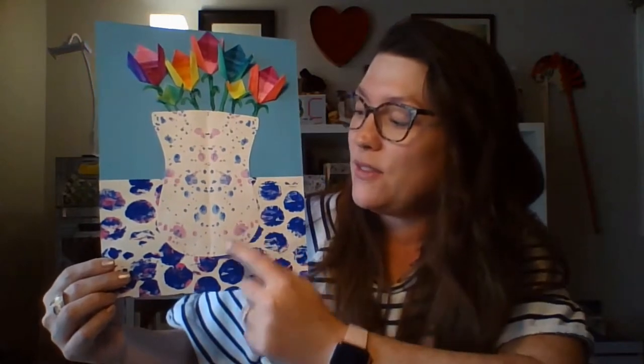I created a vase of flowers, and I used an origami fold to fold each of my flowers. I've done some printmaking here to create the tabletop pattern, and I even cut out and splatter painted a symmetrical vase. So, let's get started.